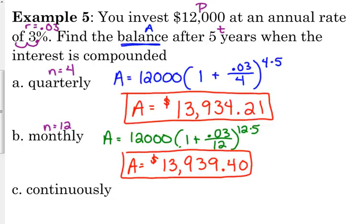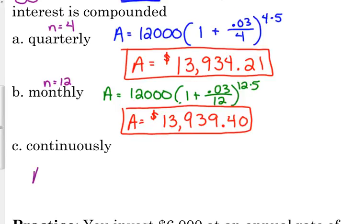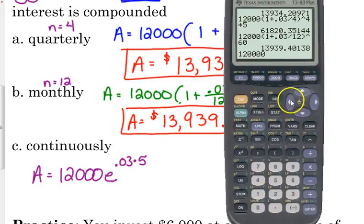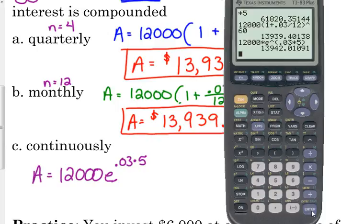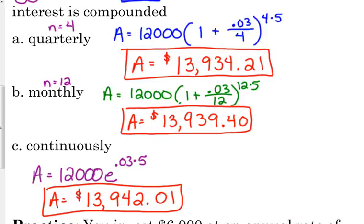Well, continuously means that it's, like, compounded all the time. I mean, as often as it possibly can, that's what the continuously means. So, this is Pe^(rt). So, A equals the principal times E to the R times T, five years. 12,000 times E to the, and the nice thing about the E is that it already puts the parentheses there for us. We don't have to remember that part. So, R times T, so we get 13,942. So, not really that much more when it's compounded continuously versus monthly. And not even $10 more than when it was compounded quarterly.